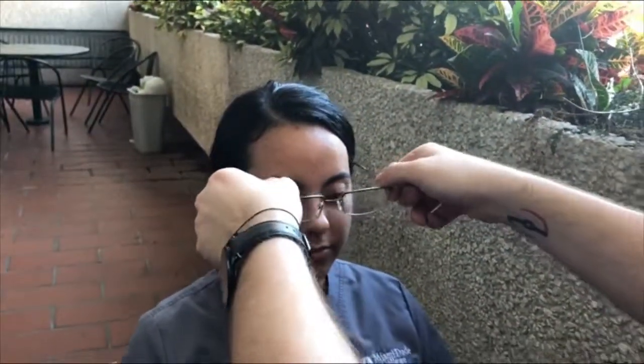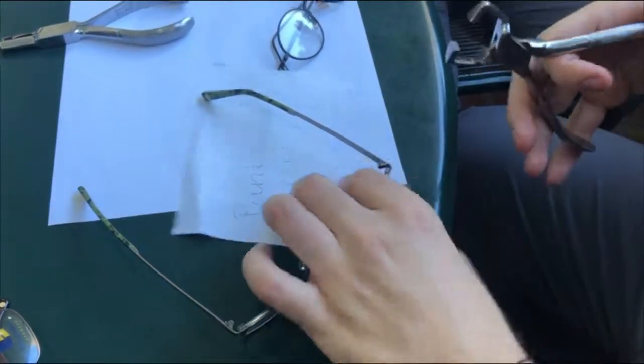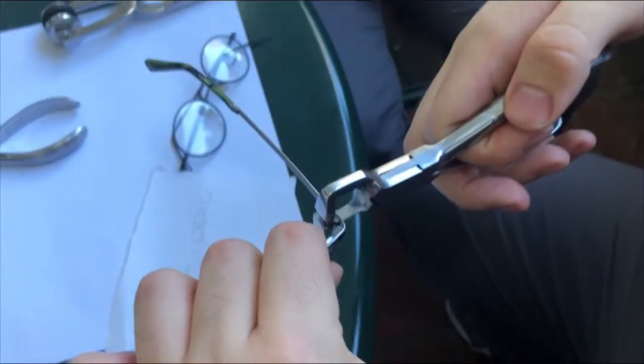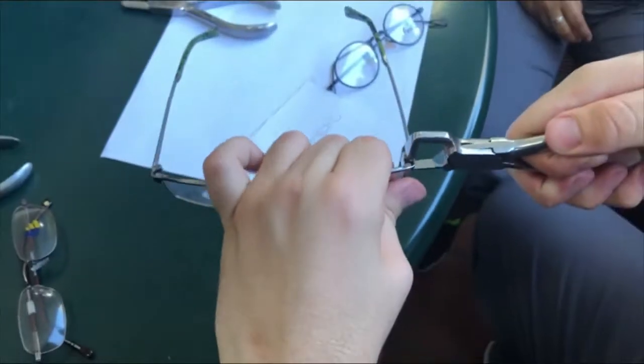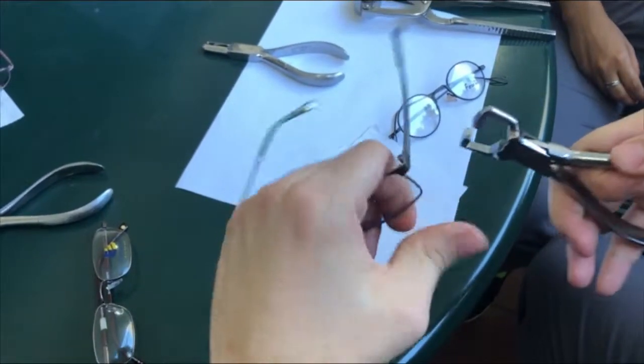In order to correct this, what you're going to do, you're going to grab your wide jaw angling plier and you're going to raise the end pieces in order to reduce the panoscopic tilt.